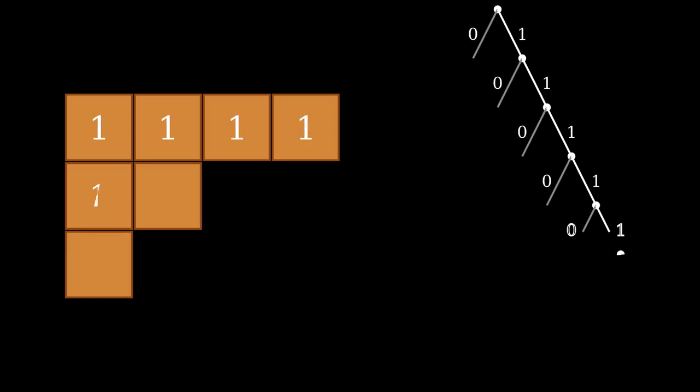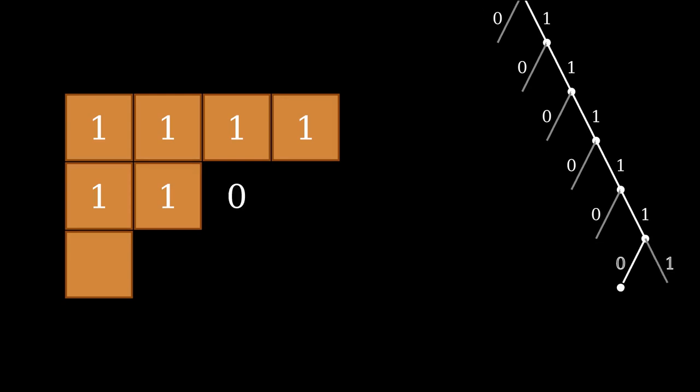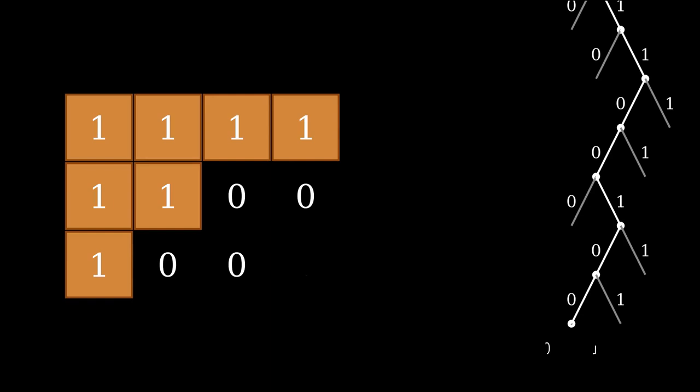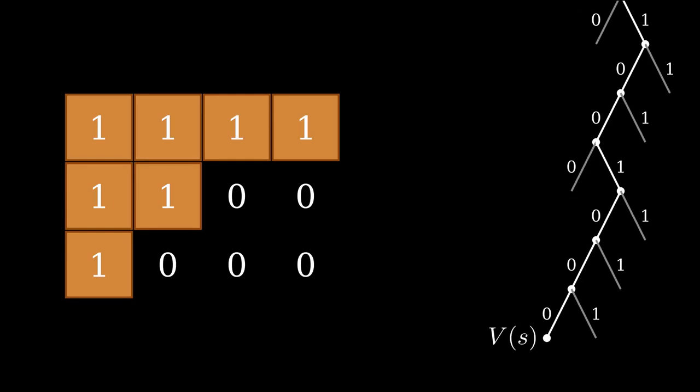We could represent each board as a binary number, with 1 or 0 representing the presence or absence of a block respectively. By using the binary bits to select a path through a binary tree, the game state value can then be stored at the leaf nodes. However, this data structure incurs significant memory overheads.